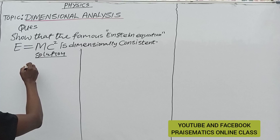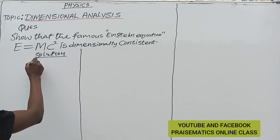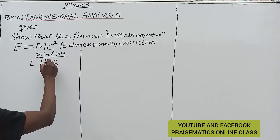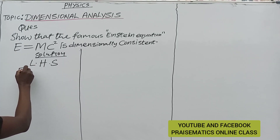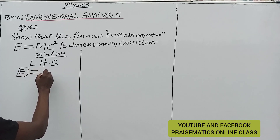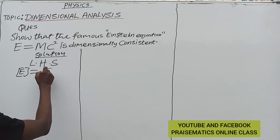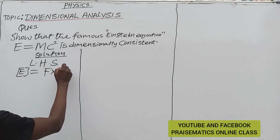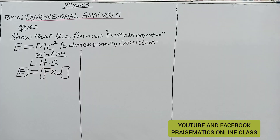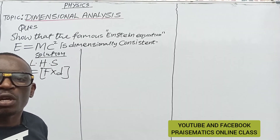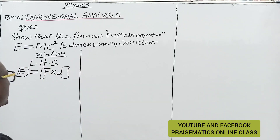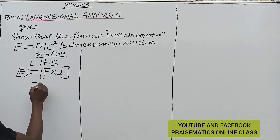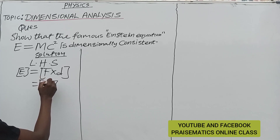Now for the solution, let's look at the left-hand side. The left-hand side is the dimension of energy. Energy is defined as force multiplied by distance. Force itself is the same as ma — that is, mass times acceleration — multiplied by distance d.